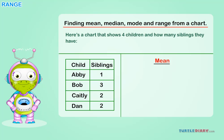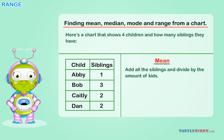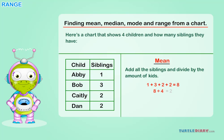Mean: add all the siblings and divide by the amount of kids. 1 plus 3 plus 2 plus 2 equals 8. 8 divided by 4 equals 2. 2 is the mean.